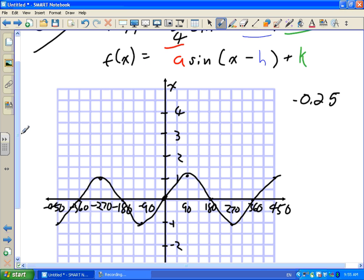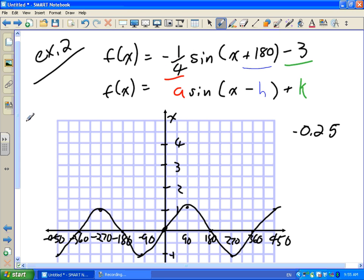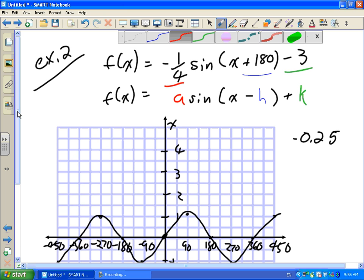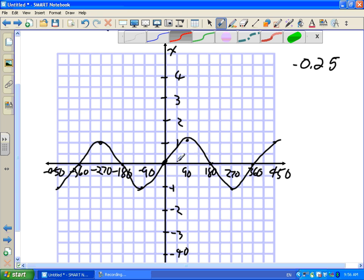Very first thing I'm going to do, I look at A. First of all, A is negative, which means everything is going to flip. Along with it being negative, it's a quarter. So instead of going the distance of 1, an amplitude of 1, this is only going to go a fourth of that distance.